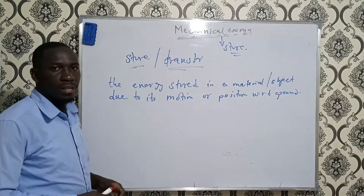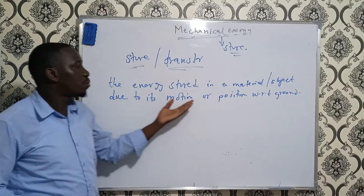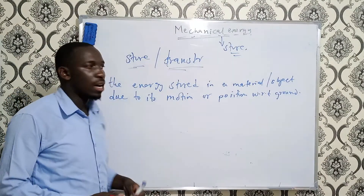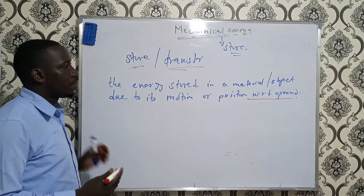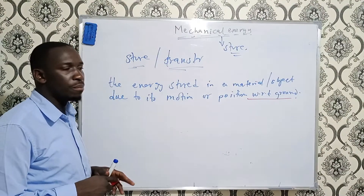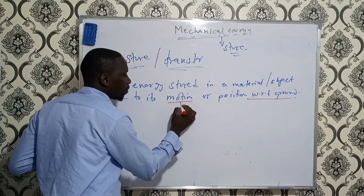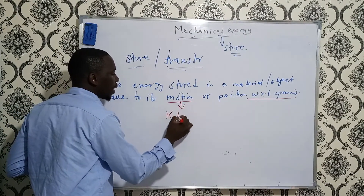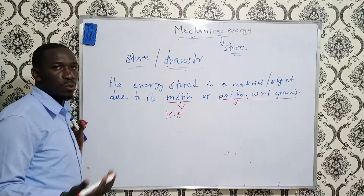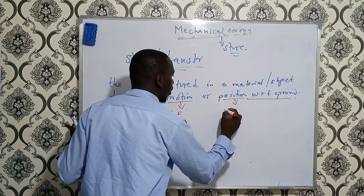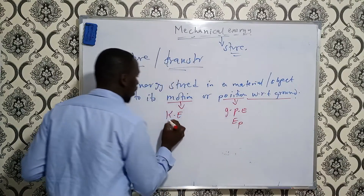Mechanical energy can be defined as the energy stored in a material or an object due to its motion or position, and this position is with respect to the ground. This brings to your attention the two forms of mechanical energy: energy associated with the motion of an object, called kinetic energy, and energy associated with the position of an object with respect to the ground, called gravitational potential energy.